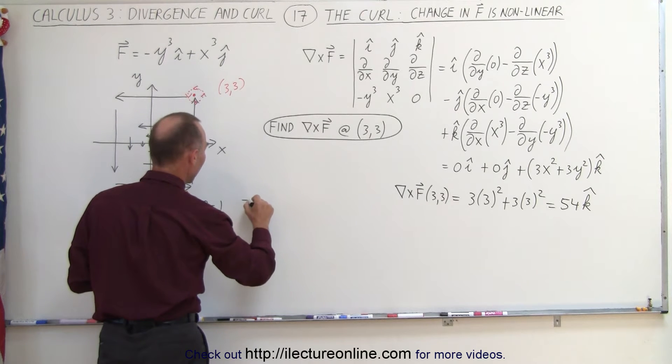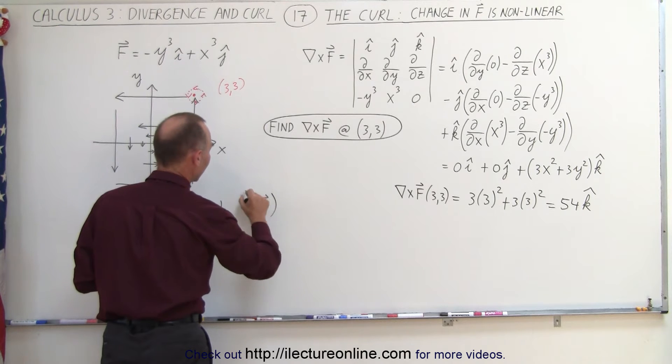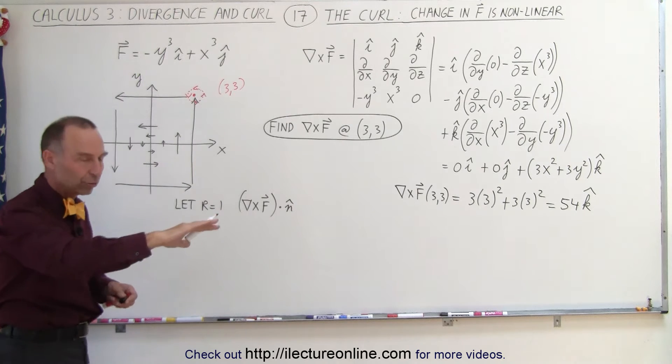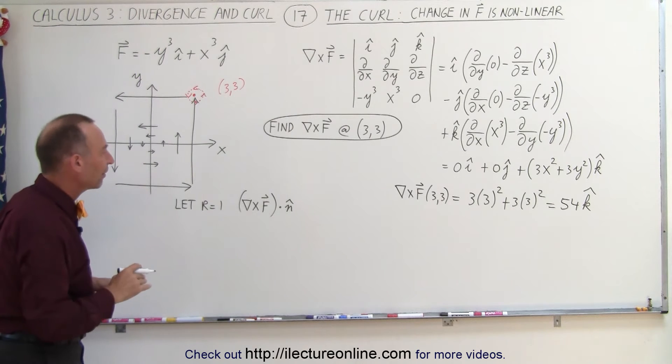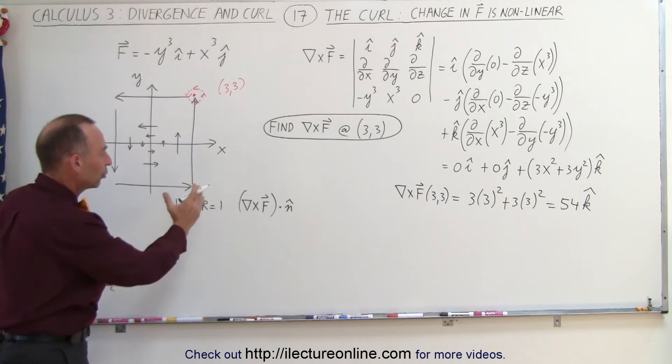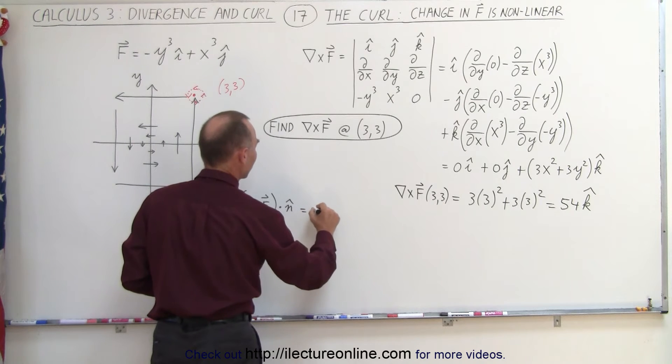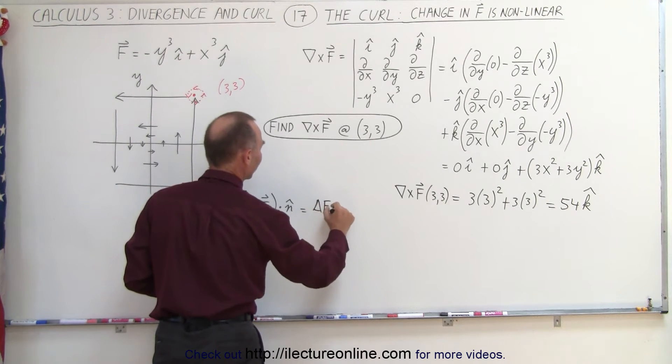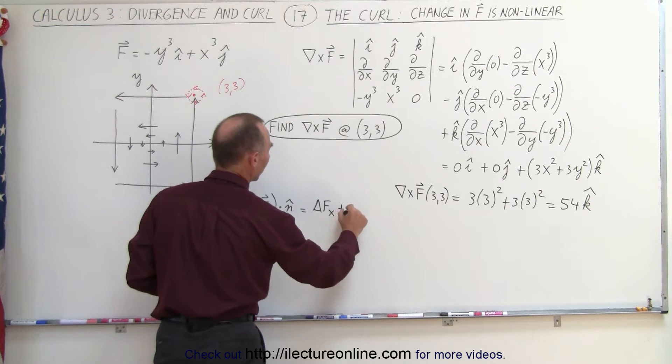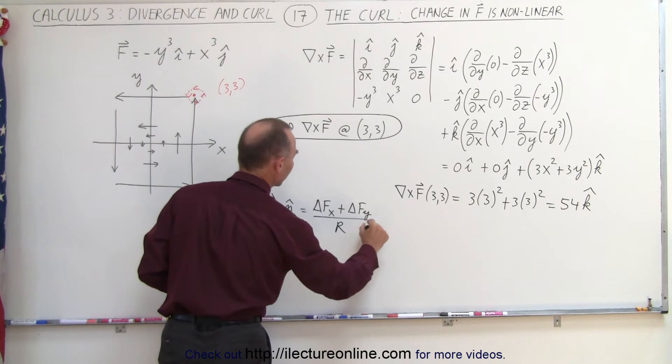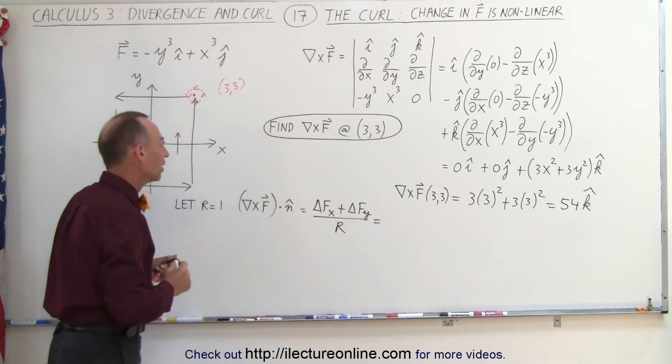So then we can say that the magnitude of the vector field, which can be expressed like this by multiplying times the normal, which is perpendicular to the plane of the vector field, which, of course, is parallel to the curl, and therefore that gives us the magnitude. This can be described as the change in the vector field as I change in the x direction plus the change in the vector field as I change in the y direction divided by the amount of the change.